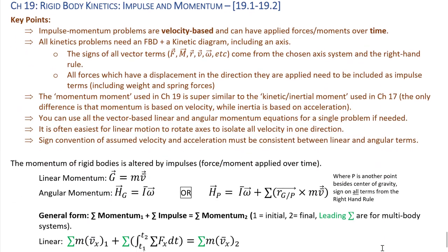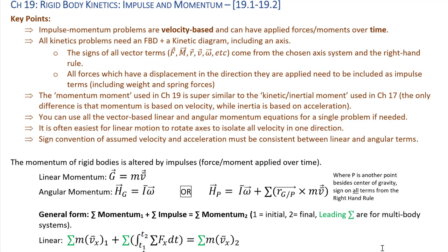Moving into the last kinetic topic: impulse and momentum. Whereas work was distance-based, impulse is time-based but still velocity-based. Key things for impulse-momentum: velocity-based, happening over time. Back to a vector system — super important to draw axes with signs for velocity terms. Momentum terms appear on the right-hand side of the impulse-momentum equation. Impulse is the product of force times time; angular impulse is the product of moment times time. All terms — forces, moments, and momentum — have vector signs from the axis system and right-hand rule.